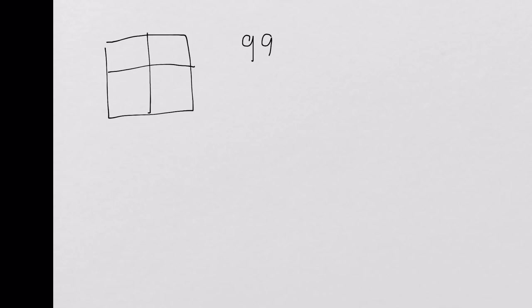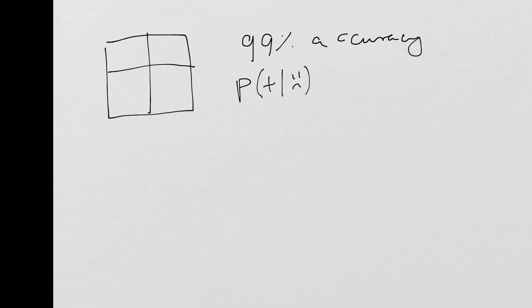We mentioned that joint probability distributions completely specify the relationship between variables. We talked about an example of a test for disease that had 99% accuracy. This actually means two things: first, the probability of the test being positive given that you have the disease is 99%, and second, the probability of the test being negative if you don't have the disease is also 99%.